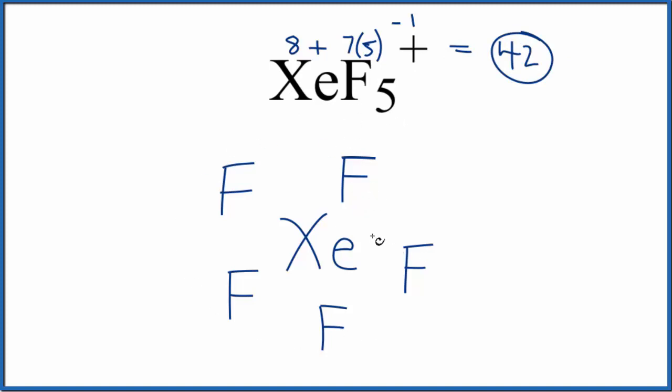So we have our fluorines on the outside. Let's put electrons between atoms. This will form the chemical bonds. So we've used 10 valence electrons. Xenon, it can have an expanded octet, so that's okay. Often you'll see single lines drawn here to show the bonds. We'll just leave them as pairs of electrons though.